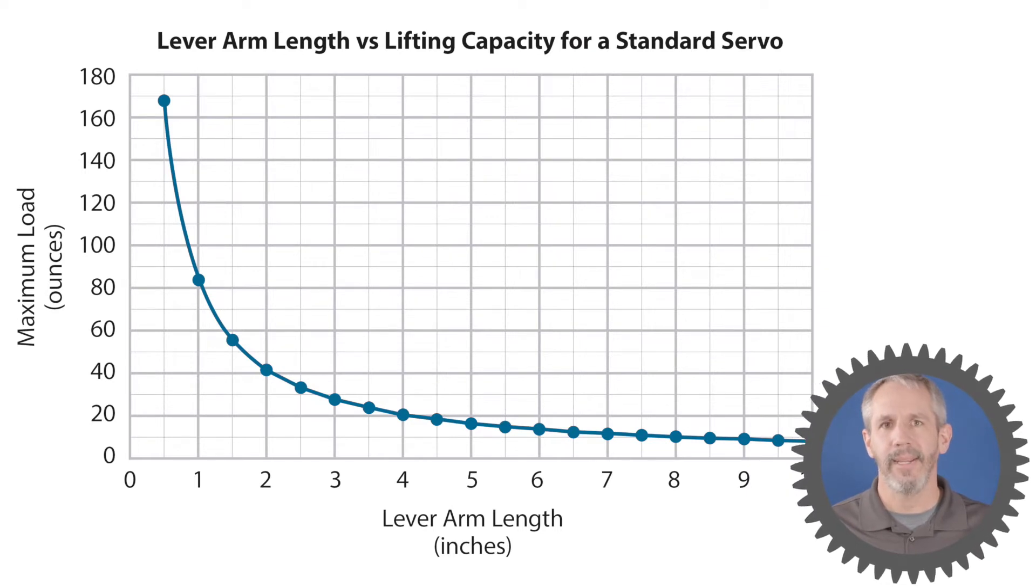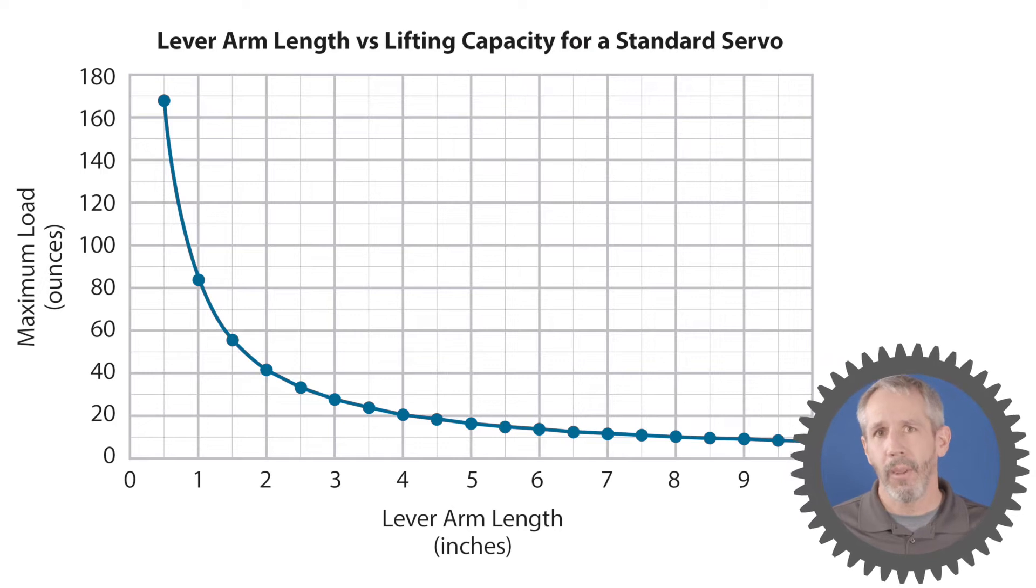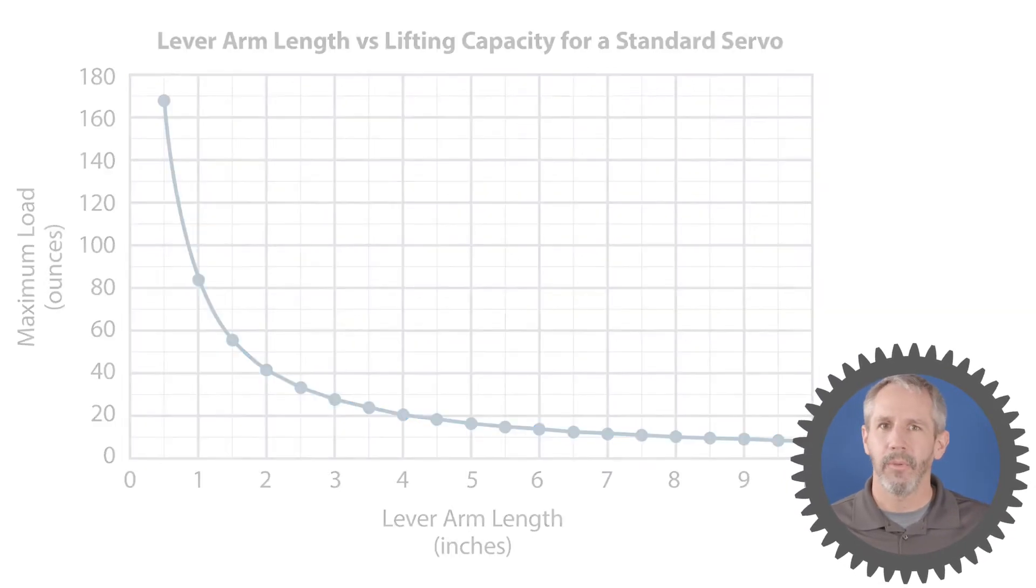So you can see that as the lever arm length increases along the x-axis, the amount of weight the servo can lift decreases along the y-axis. So the longer your lever arm, the less weight you can lift.